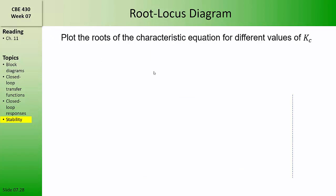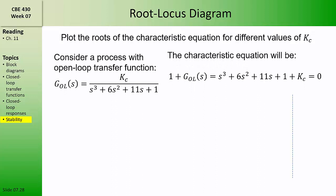The root locus diagram provides a graphical representation of how this direct substitution method works, and it also provides more information about how the roots of the characteristic equation — representing the poles of the closed loop transfer function — change as we change the values of Kc. To show how this works, we'll consider a process with a different third-order characteristic equation. Consider one with an open loop transfer function Kc over s cubed plus 6s squared plus 11s plus 1. The characteristic equation is 1 plus the open loop transfer function set equal to zero, giving us this polynomial.